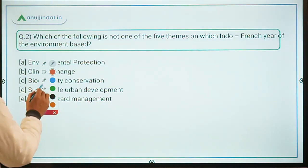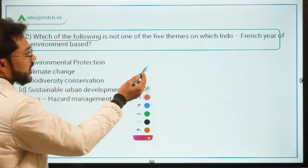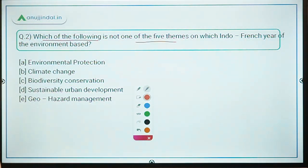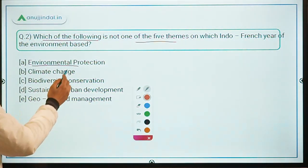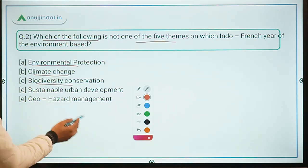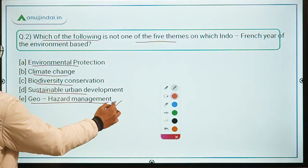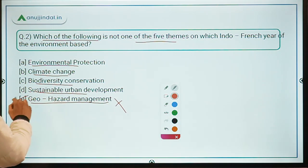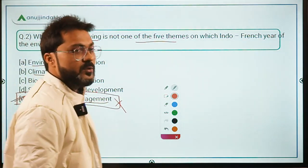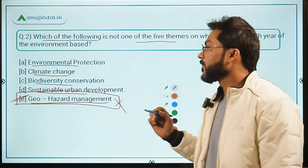So we need to identify which option is NOT one of the five themes. Environmental protection, climate change, biodiversity conservation, and sustainable urban development are all included. However, geo-hazard management is not one of the five themes — the fifth theme was related to renewable energy and energy efficiency. Therefore, Option E (geo-hazard management) is the correct answer.